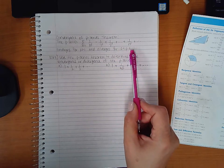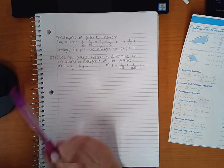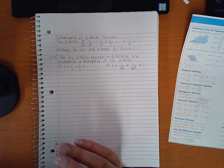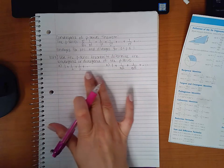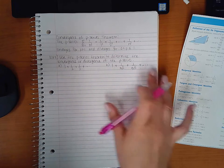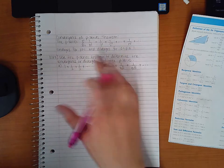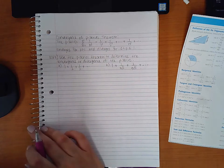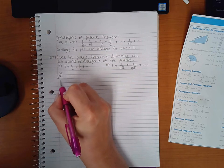Example three says use the p-series theorem to determine the convergence or divergence. Now notice they give it to me in the form of a list, not in its series version. So in order for me to figure out what p is, I need to put it into this summation notation. We know it's going to infinity by the dot dot dot, and I'm going to start off with n equals one.